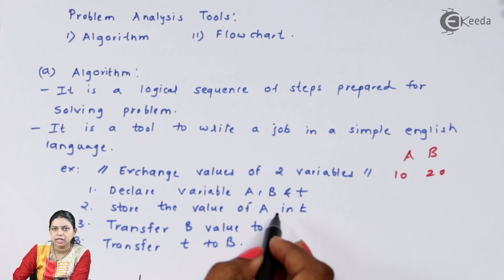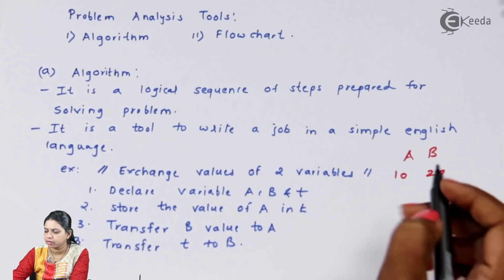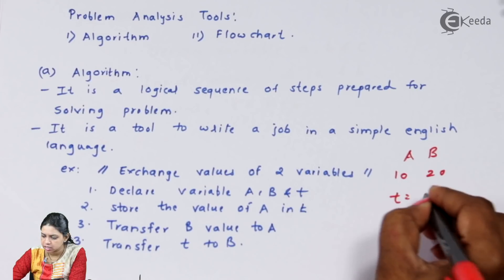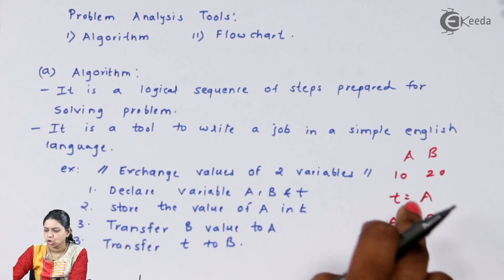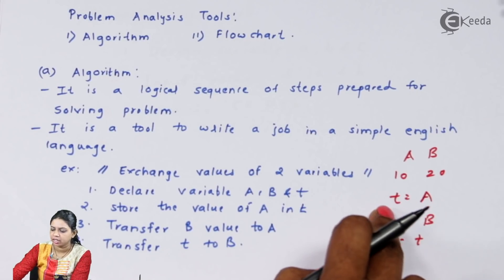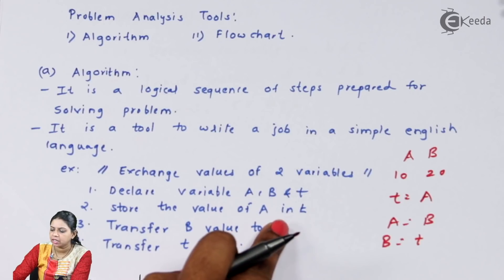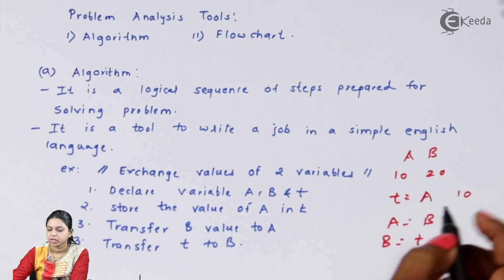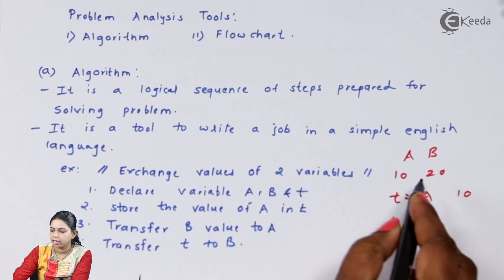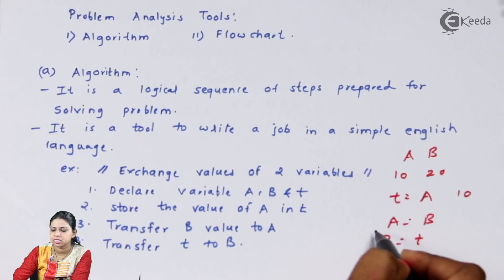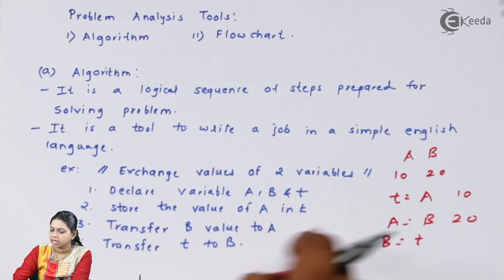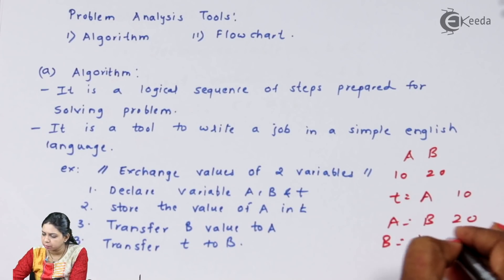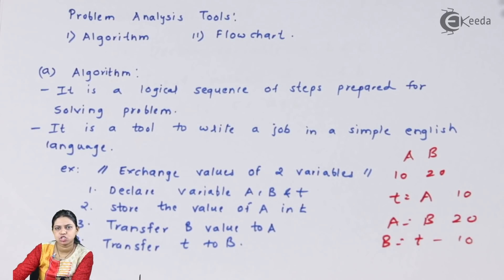When we exchange values, we do: T = A, then A = B, then B = T. First we store the value of A inside T, so T becomes 10. Then we transfer the value of B to A, so A becomes 20. Then T, which holds 10, is transferred back to B, so B becomes 10. This is how we swap the values of two variables.